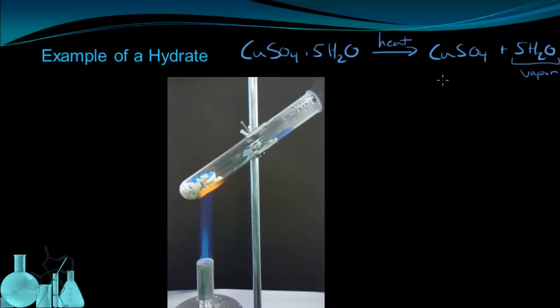Now the copper-2-sulfate that you can see has changed color is referred to as the anhydrous salt, meaning the water has been removed from this salt.